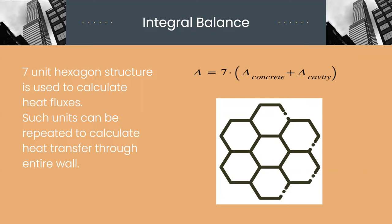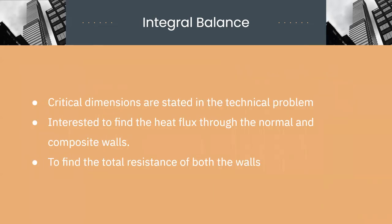For simplicity, we will be using 7 units of hexagonal structure to calculate all the fluxes. These units, when repeated, can be used to calculate heat transfer through the entire wall. A_concrete and A_cavity in the given equation are simply the area of concrete and cavity part of single unit of hexagon. Critical dimensions are stated in the technical problem. We are interested to find the heat flux through both types of walls and for that we have to calculate total resistance of walls as well.